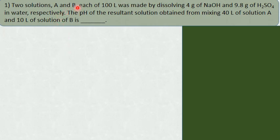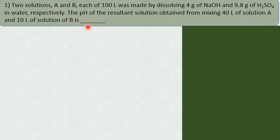Two solutions A and B, each of 100 liters, was made by dissolving 4 grams of NaOH and 9.8 grams of sulfuric acid in water respectively. The pH of the resultant solution obtained from mixing 40 liters of solution A and 10 liters of solution B is how much.